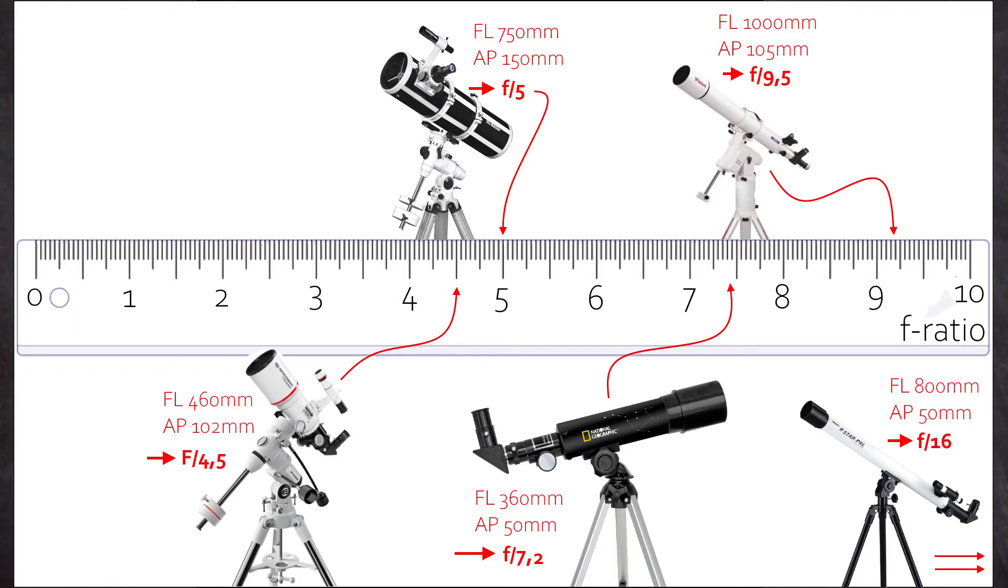And then we have the Brasser refractor with short 450mm focal length. Having nearly the same aperture as the long Vixen, that was the second scope, its f-ratio is down to f4.5.